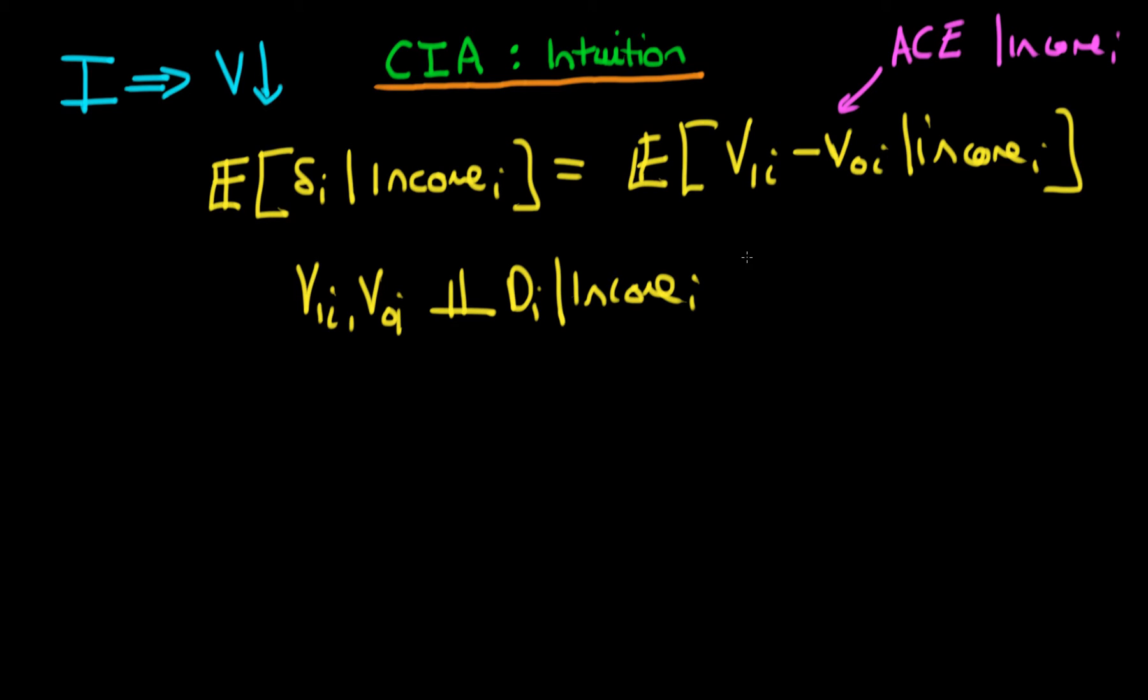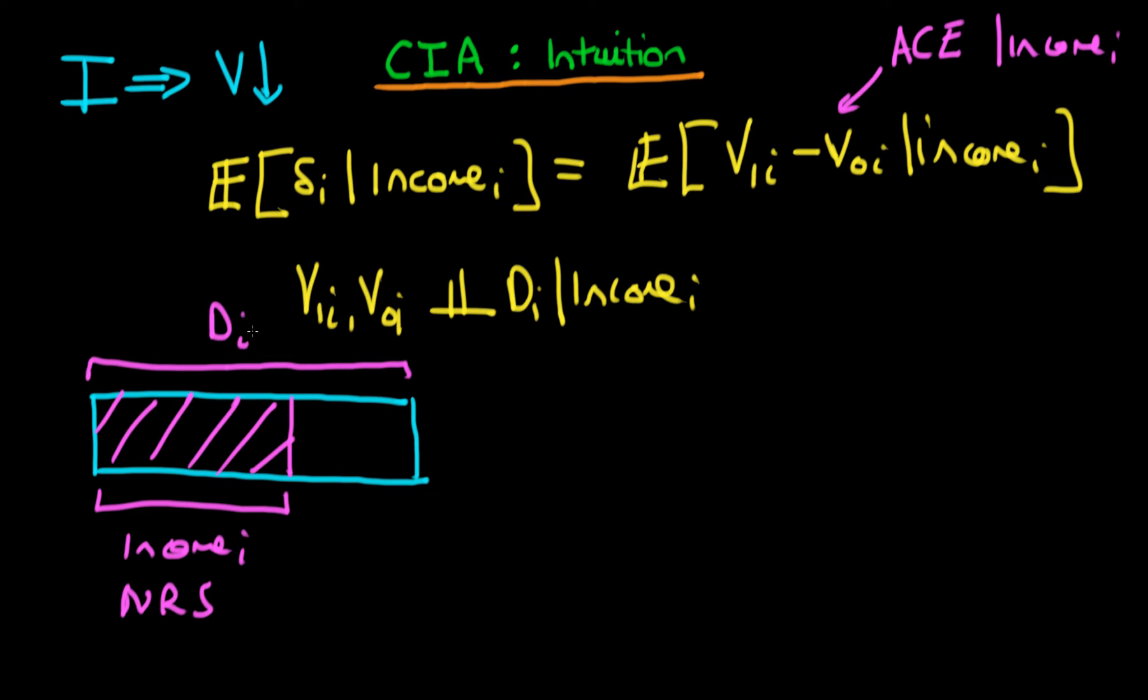Well, what we can do is we can think about Di, whether or not a particular state receives infrastructure spending, or the decision as to whether or not a state receives infrastructure spending, as being composed of two components. There is the component of Di which is due to selection on the basis of income. And importantly, this is non-randomly selected. So I'm sort of taking this whole bar here to represent Di or the variance in Di.